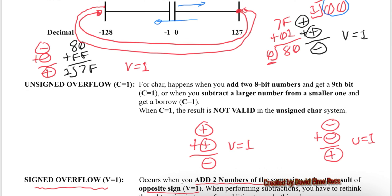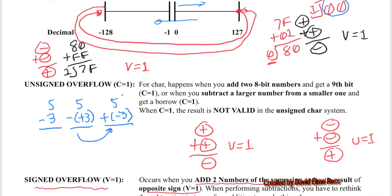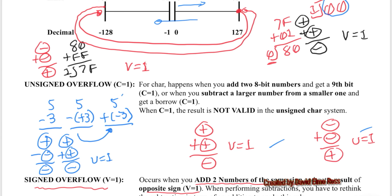We're not always going to get addition — sometimes subtraction. For any subtraction, we convert it to the equivalent addition: for example, 5 subtract 3 is the same as 5 plus negative 3. So if we have a positive subtracting a negative, that's positive plus positive — we can apply the overflow rules. For any subtraction, convert it to the equivalent addition to determine whether V equals 1 or V equals 0.